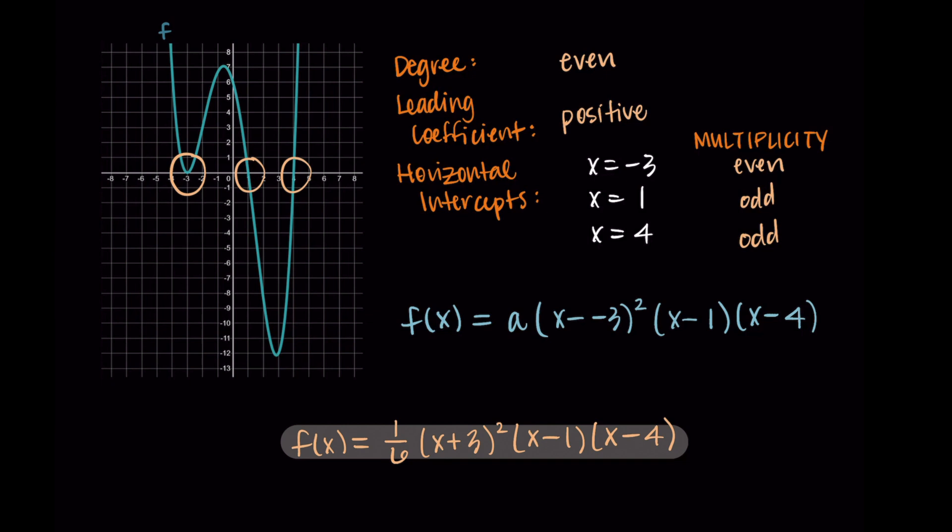We said that the degree should be even, so if I look at the degrees on these terms, I'd have a two plus one plus one, so that's degree four, which is good. Four is an even number. And then I see the leading coefficient is one sixth, which is a positive value. So we have a positive leading coefficient on our even degree polynomial, which is what we wanted.